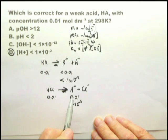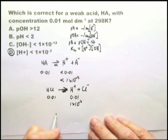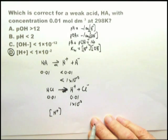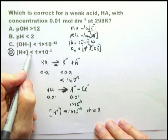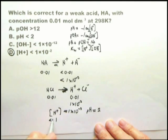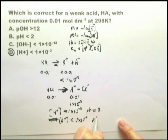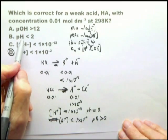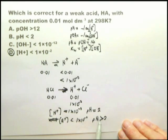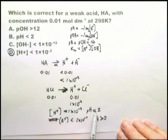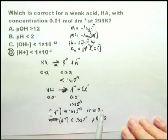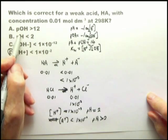Let us now look at how we convert these hydrogen ions into a pH. If we have a hydrogen ion concentration of 1 times 10 to the minus 2, pH equals 2. If we have a hydrogen ion less than 1 times 10 to the minus 2, the pH is going to be greater than 2. Therefore, a pH less than 2 is wrong. It is quite reasonable for a weak acid to have a pH greater than 2. It is not reasonable for a weak acid to have a pH less than 2, because hydrochloric acid has a pH of 2 at this concentration. No weak acid would have a pH less than 2. So we've eliminated that one.